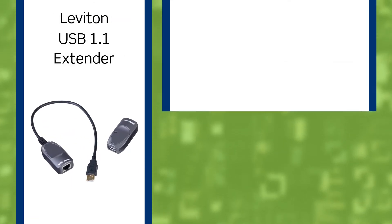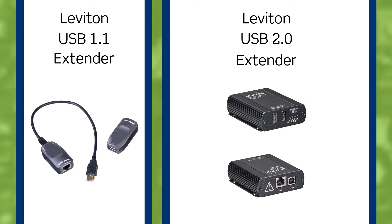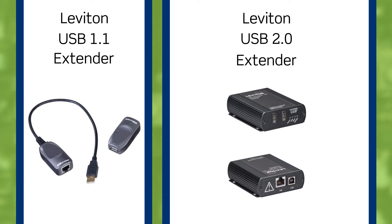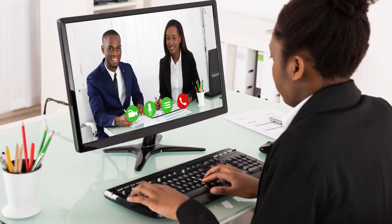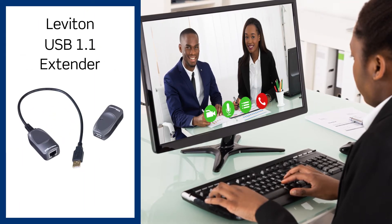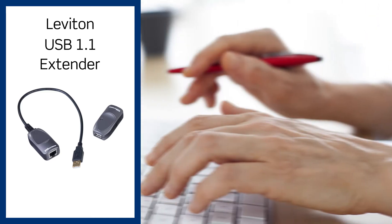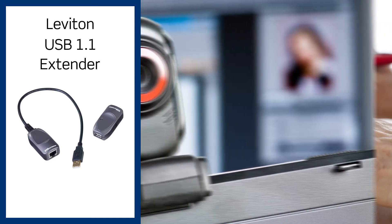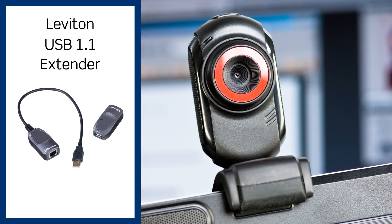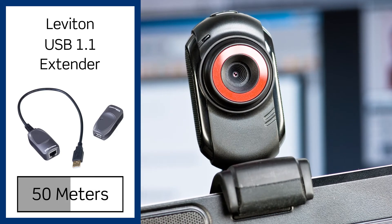There are multiple USB technologies on the market, but the two main options used in commercial and education settings are USB 1.1 and USB 2.0. USB 1.1 is a low bandwidth connectivity option. It works for interface devices such as a wired or wireless mouse, keyboard, touch screen connection, or webcam. The Leviton USB 1.1 signal extender increases signal reach up to 50 meters.